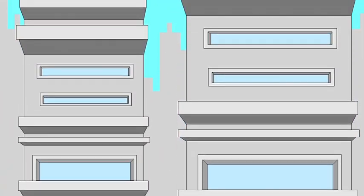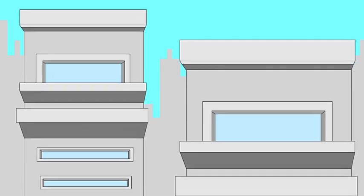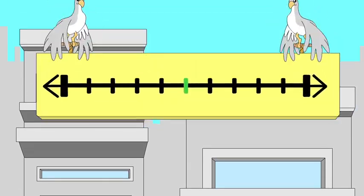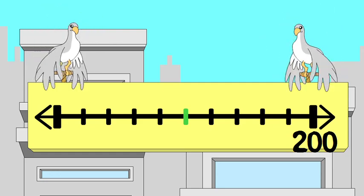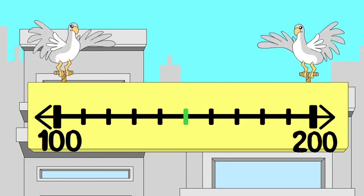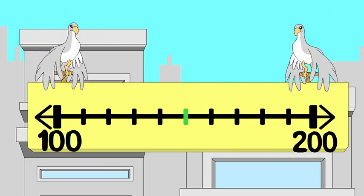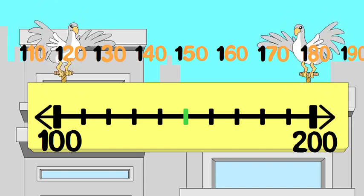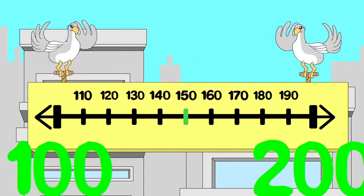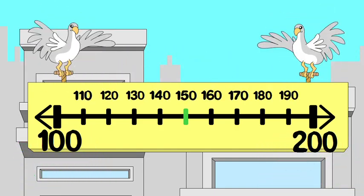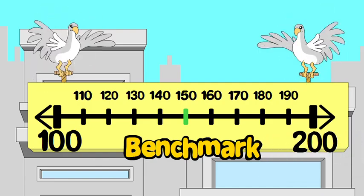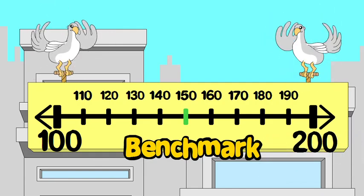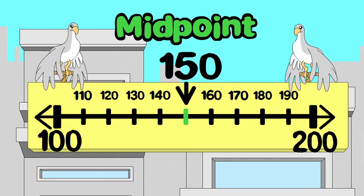Here are some useful things to know. You can show any number on a number line. Numbers to the right have a greater value than numbers to the left. The nearest hundred on either side of our number is a useful benchmark.